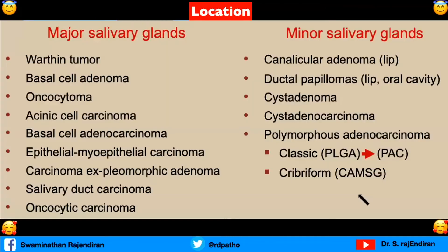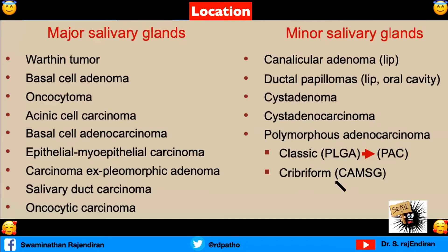Location is very, very important. Take a snapshot of this because when you come for differential diagnosis, check whether it is in the major or minor salivary gland and go through the list. Some tumors can happen anywhere, but some are more common in specific locations. For example, canalicular adenoma almost always happens in the upper lip — never try to diagnose canalicular adenoma in the major salivary glands. Ductal papilloma, cystadenoma, cystadenocarcinoma, polymorphous adenocarcinoma — now known as polymorphic adenocarcinoma or cribriform low-grade adenocarcinoma of minor salivary glands — these are all new terminologies and they happen in the minor salivary glands.